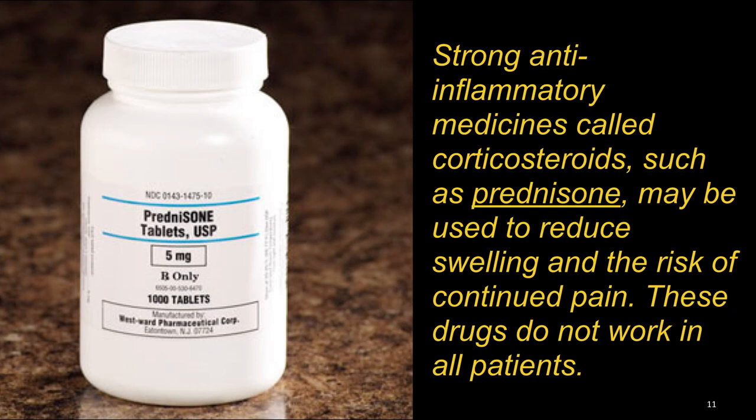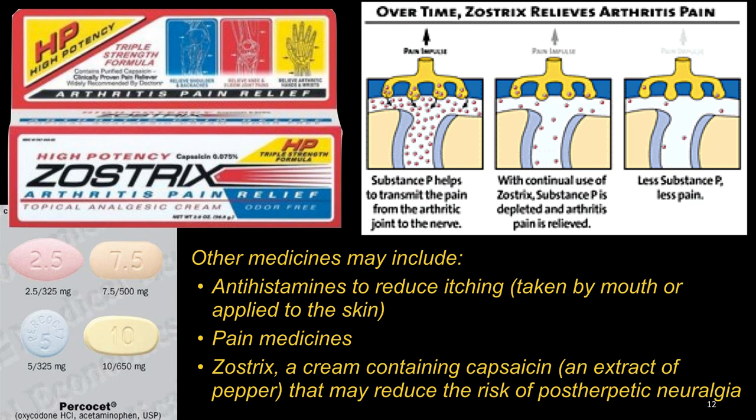Strong anti-inflammatory medicines called corticosteroids such as prednisone may be used to reduce the swelling and the risk of continued pain. These drugs do not work in all patients. Other medications include antihistamines to decrease the itching, pain medication, and a cream containing capsaicin, an extract of pepper that may reduce the risk of post-herpetic neuralgia.